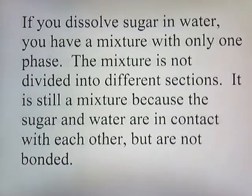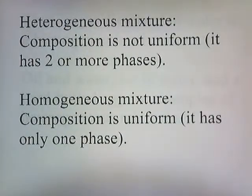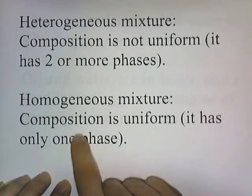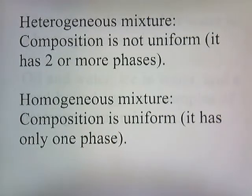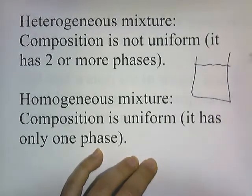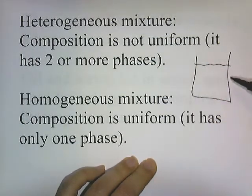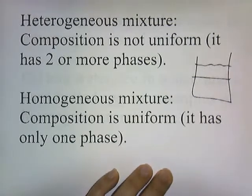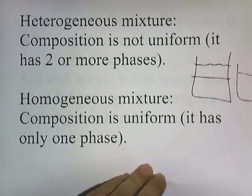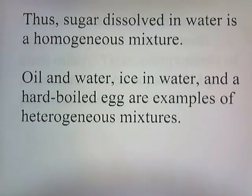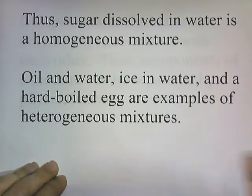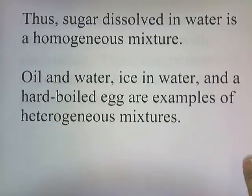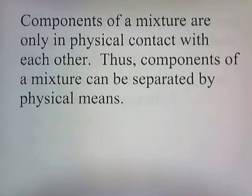A heterogeneous mixture has a composition that is not uniform — it has two or more phases. A homogeneous mixture has a uniform composition — it has only one phase. Sugar water just looks like regular water; you only see one liquid phase with no divisions. Sugar dissolved in water is a homogeneous mixture, while oil and water, ice and water, and a hard-boiled egg are all heterogeneous mixtures.